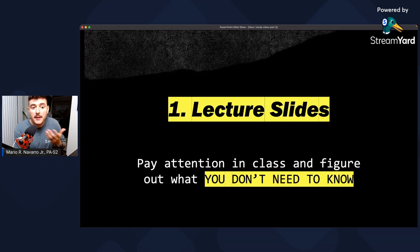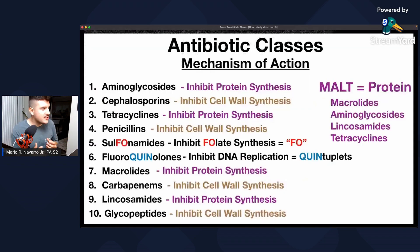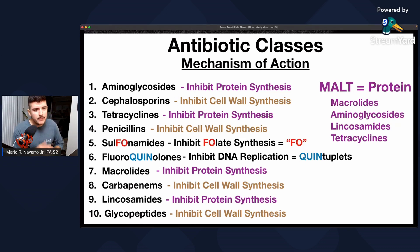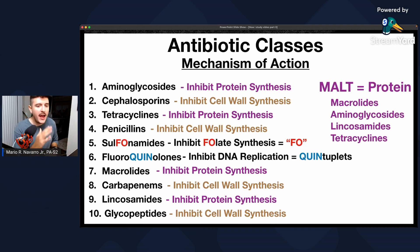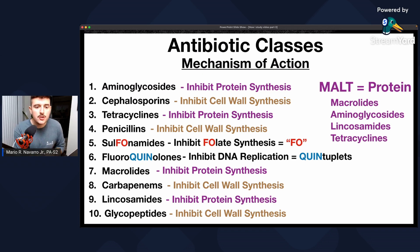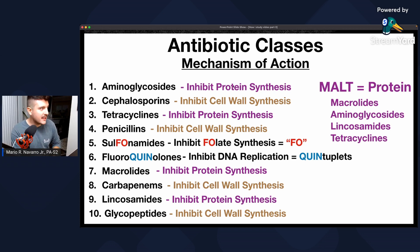I want to provide an example of what a typical pharmacology lecture slide can look like. This is a very jam-packed one I found online about common antibiotic classes. In a hypothetical situation, let's say you're responsible for knowing all of it, but your professor says you're only responsible for the stuff in purple — that knocks out half the things you don't need to memorize. So I'd focus on the purple items: antibiotics that inhibit protein synthesis, including aminoglycosides, tetracyclines, macrolides, and lincosamides.